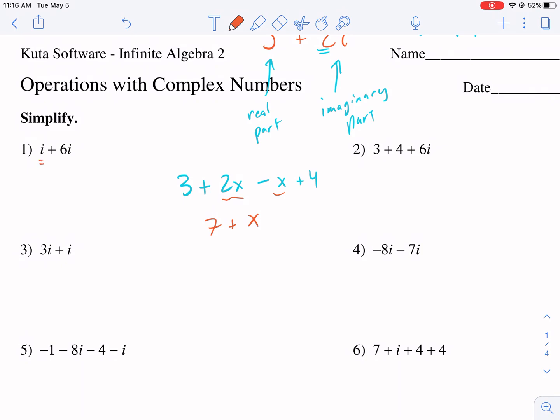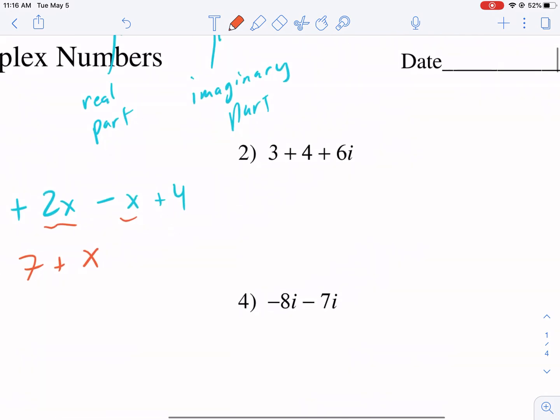So we have i, we have 6i, and this is going to equal 7i. You just combine the i's together. Here we have the real part, 3 and 4, and then we have the imaginary part. There's no other imaginary part, so this guy's going to stay the same.